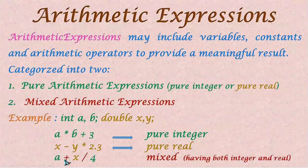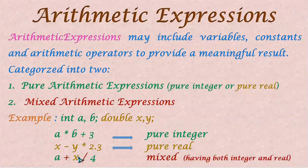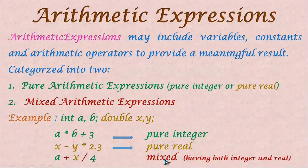Next, we have A plus X divided by 4. Here X is real and A is integer, so these two are mixed. We can say this is a mixed arithmetic expression.